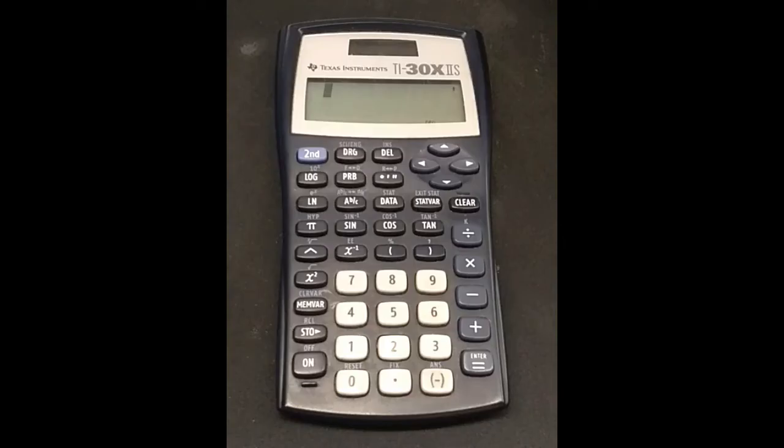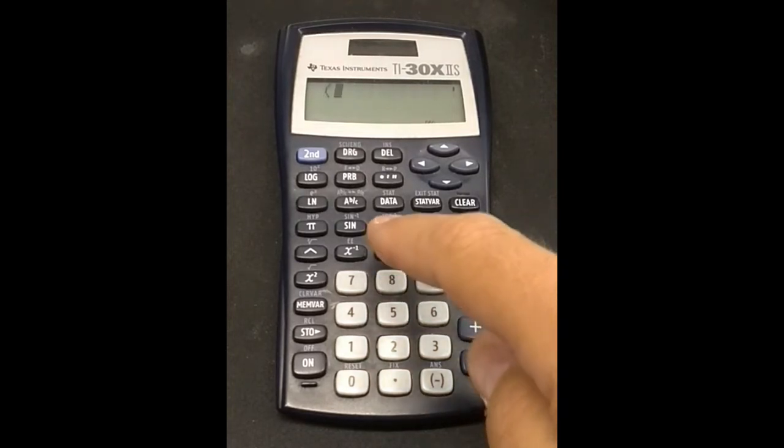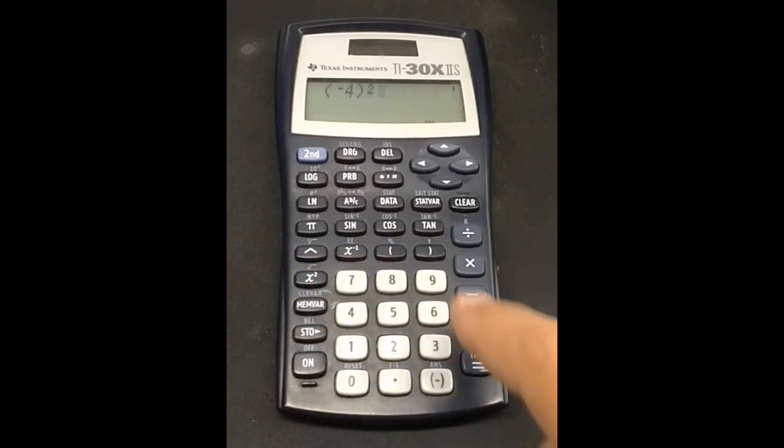Any time you want to square a negative number, you must put that number in parentheses. Parentheses, negative 4, close parentheses, squared, equals 16. You can always put a positive number in parentheses when squaring. That won't hurt anything. So if it helps, you can always remember to put the number you are squaring in parentheses, and you'll never go wrong.